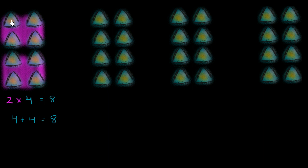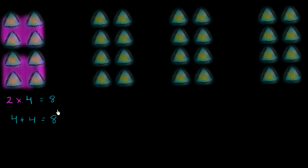And you see that right over here — one, two, three, four, five, six, seven, eight things. What I want you to do is pause the video now and try to group these same eight things in other ways, so that we can represent eight as the product of whole numbers. Here I've represented eight as the product of two and four — two times four is eight. See if you can represent eight as the product of other whole numbers, grouping it in different ways.